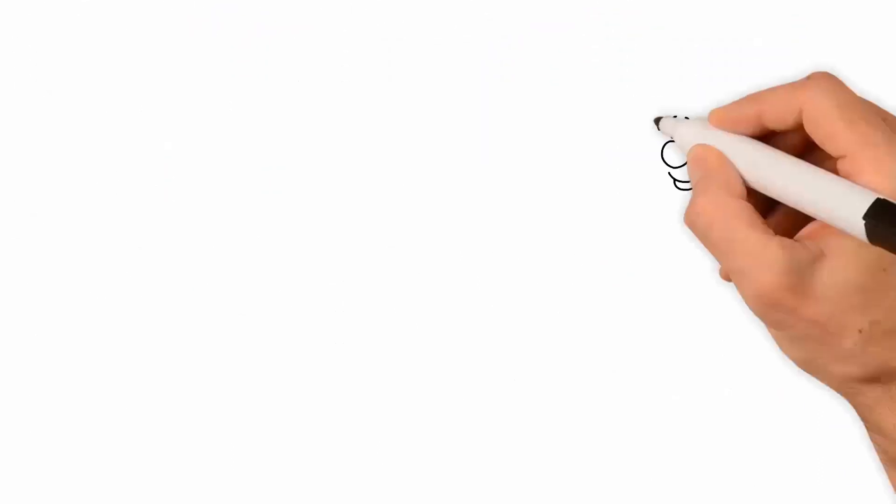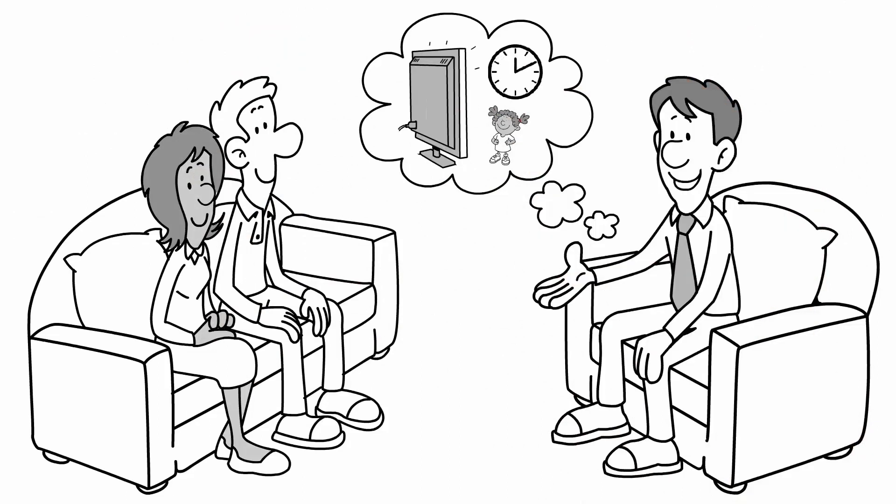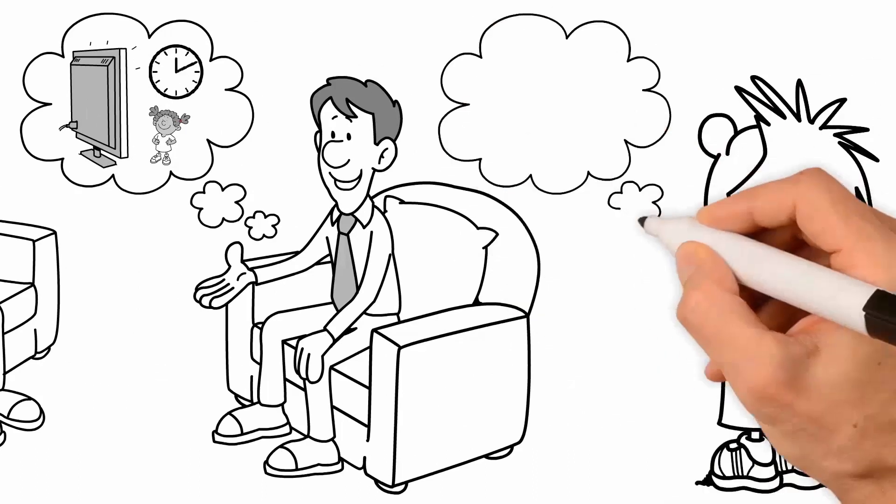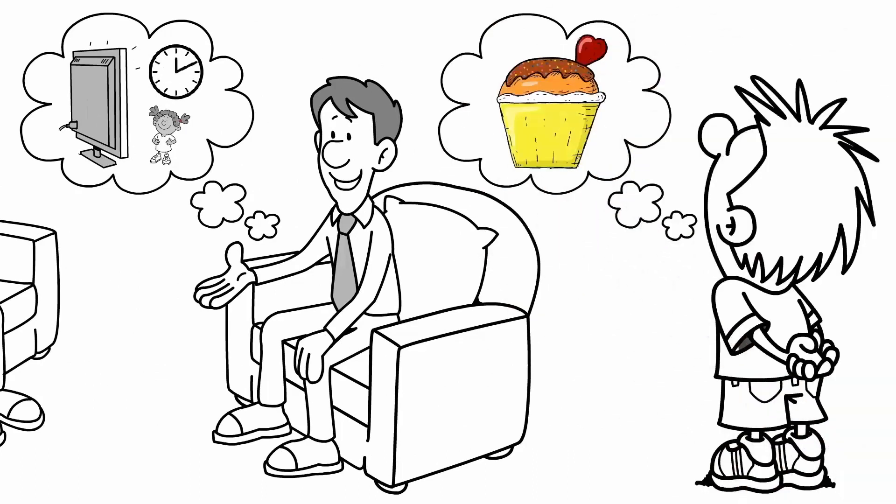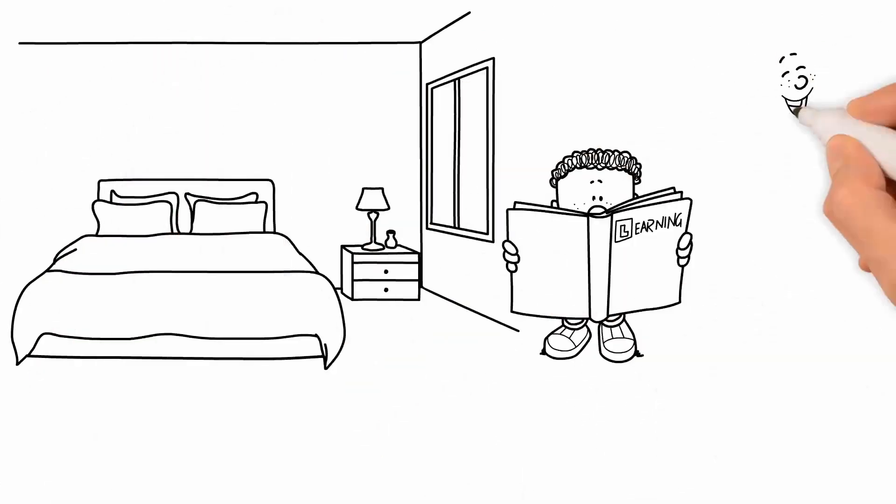Second, educators should work with parents to limit children's television watching. Since the more children watched television, the more positive were their implicit and explicit attitudes towards unhealthy food. Removing televisions from children's bedrooms could be one step in this direction.